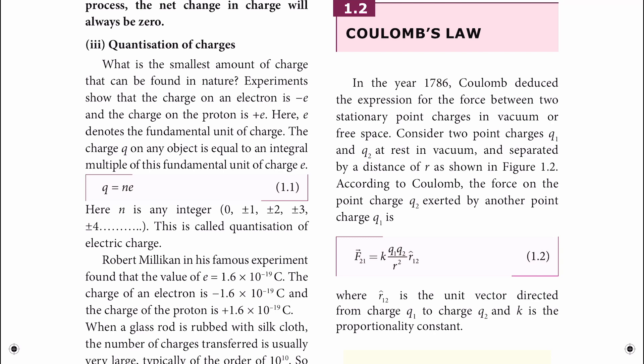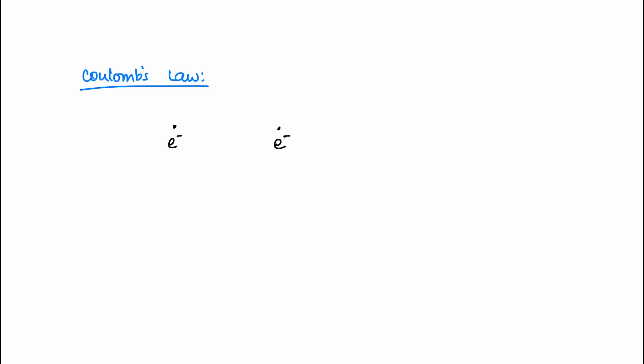First, we will look at an overview. We will talk about Coulomb's law. Let's consider two electrons. If we have two electrons, there is a repulsion force between them. How much is the repulsion? The force acting between two electrons is a force — and force is a vector.